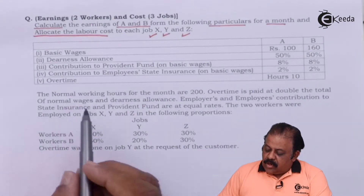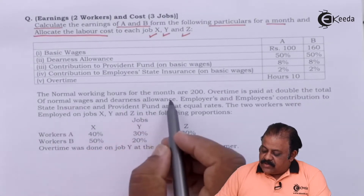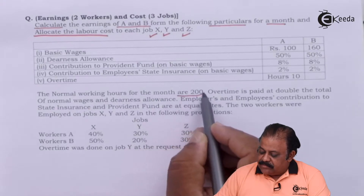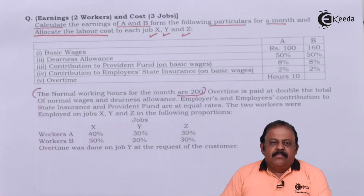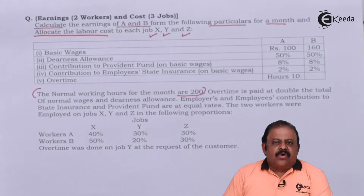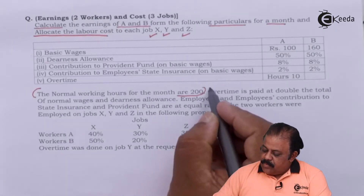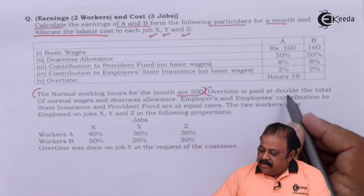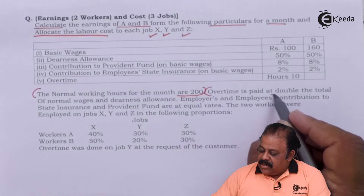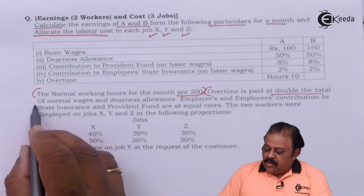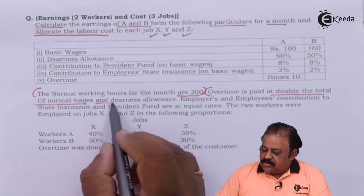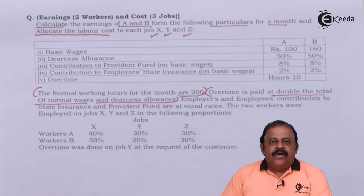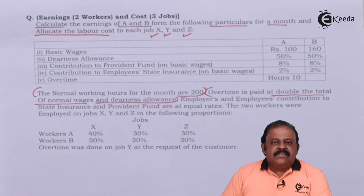The normal working hours for the month are 200 hours. In case of overtime, overtime is paid at double the total of normal wages and dearness allowance, so in case of overtime it is a double rate. Overtime hours worked are 10 hours.